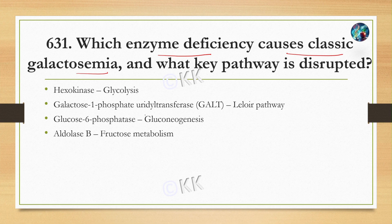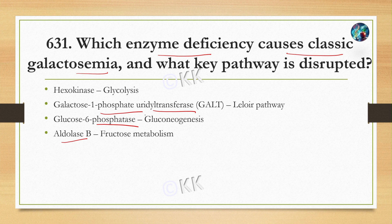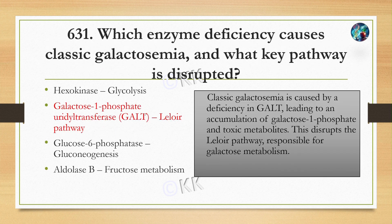Which enzyme deficiency causes classic galactosemia and what key pathway is disrupted? Option A: hexokinase, glycolysis pathway. Option B: galactose-1-phosphate uridyl transferase, Leloir pathway. Option C: glucose-6-phosphate, gluconeogenesis pathway. Option D: aldose B, fructose metabolism pathway.